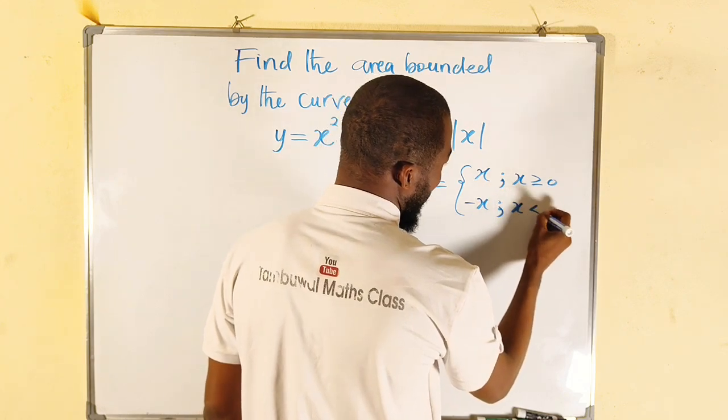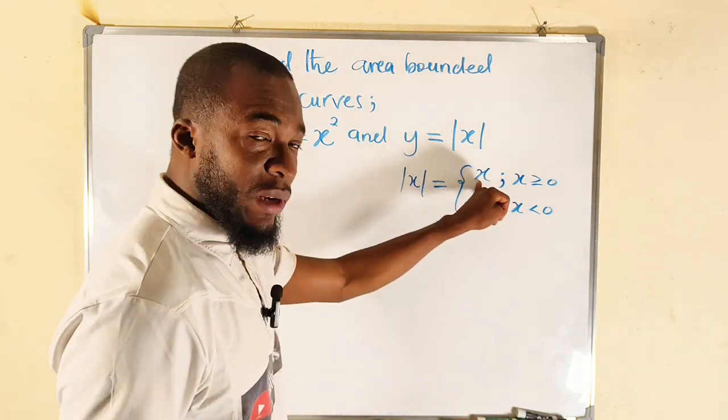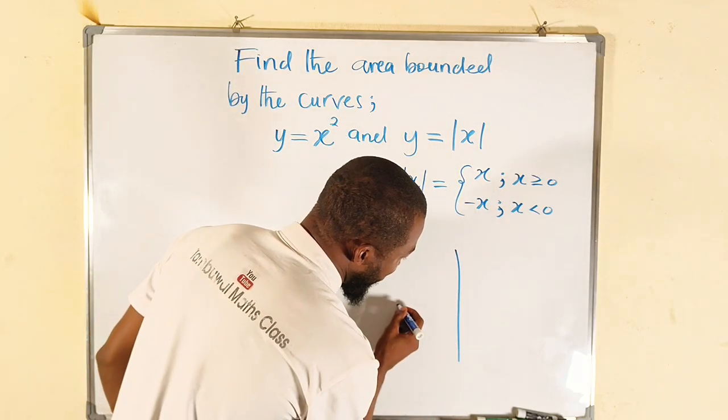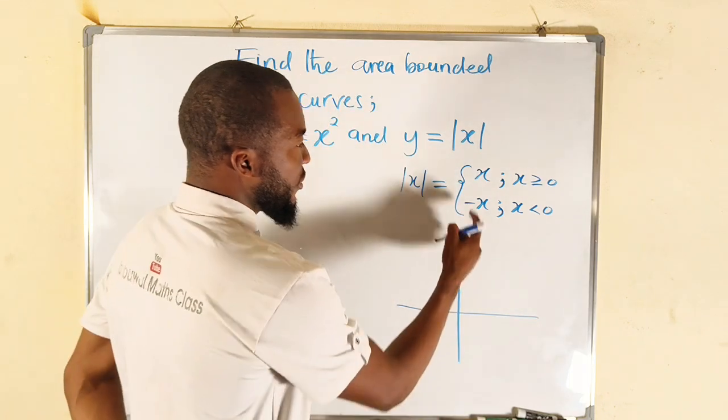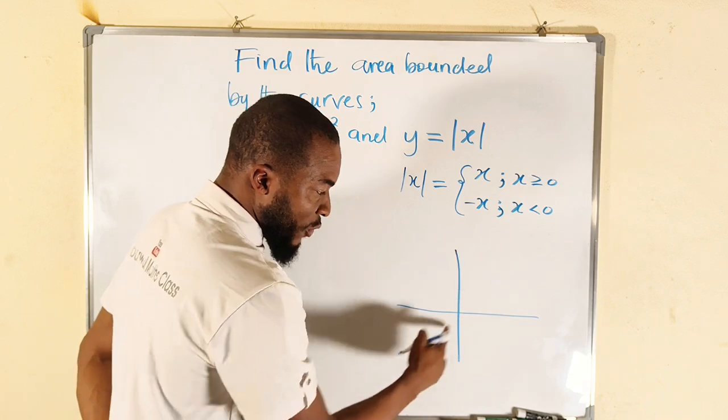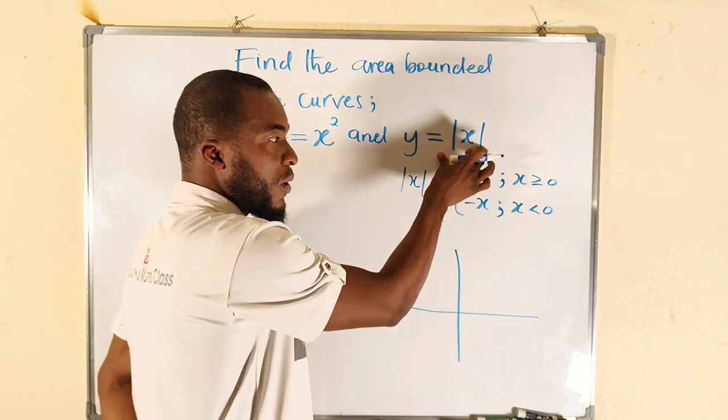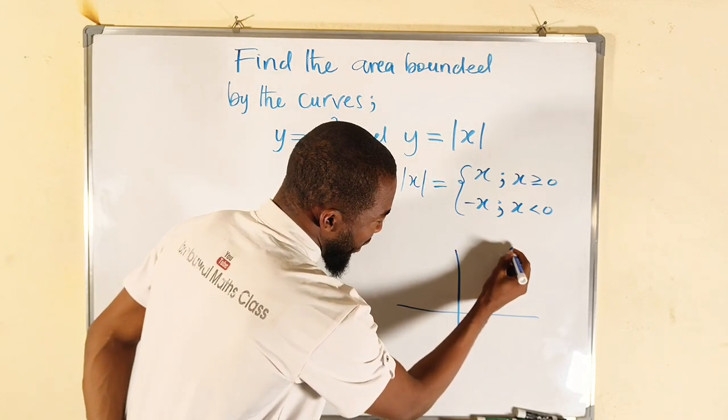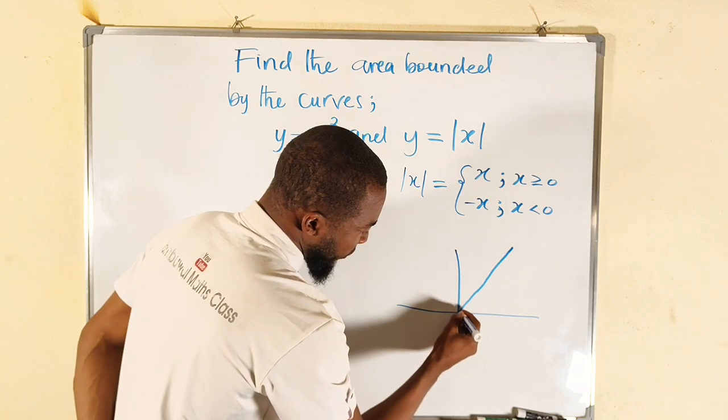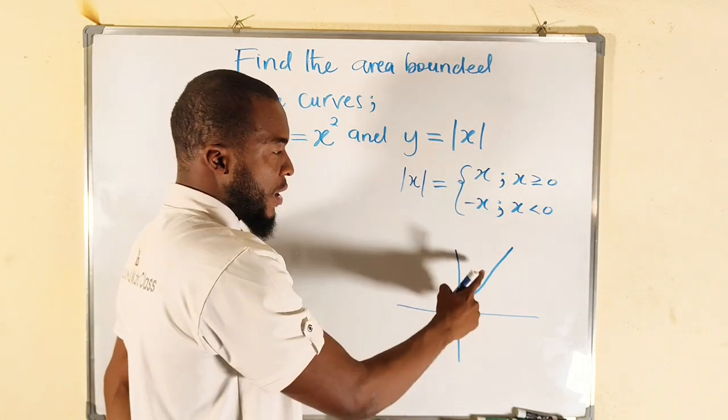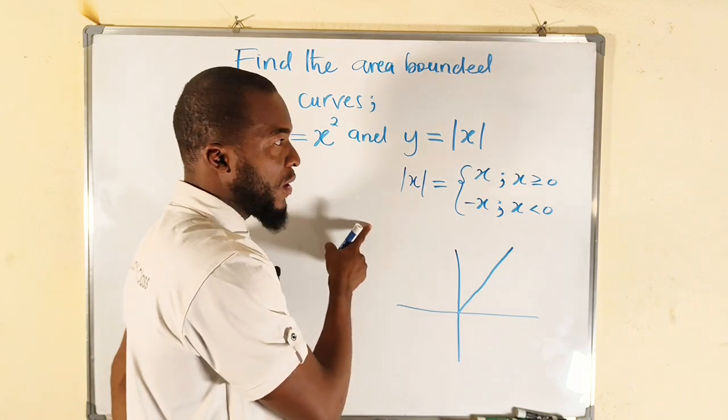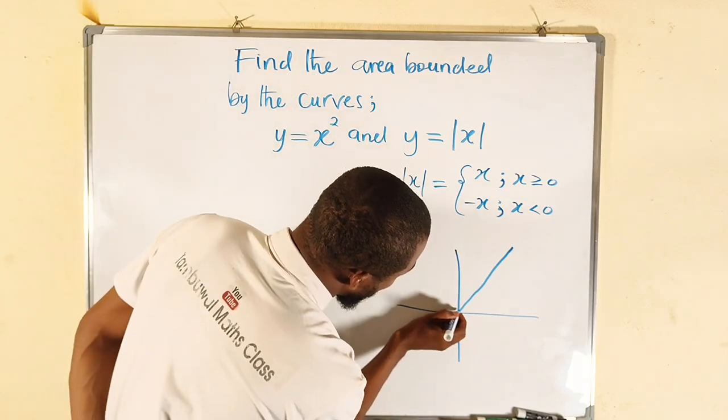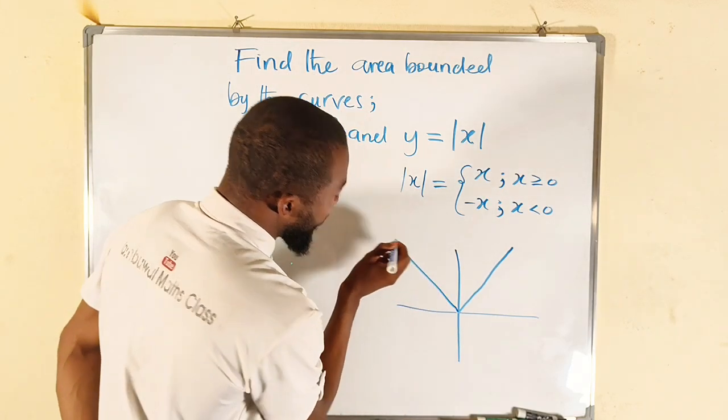So to graph this, you know how the graph of x looks like. We have something like this. The graph of x passes through the origin like this, but because we are talking about absolute value, everything will be to the top. So we have one leg here. That is for x, and for the negative x it will pass through this. We are talking about absolute values, so all the values of y will be positive. So we have the other one here, something like this.